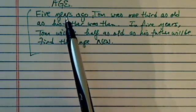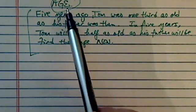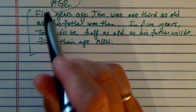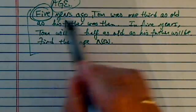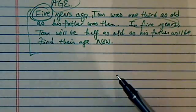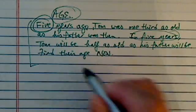Today we have a very interesting word problem here that's age-related. In solving this age-related problem, a common mistake students make is that they don't take into consideration of the time. So it's five years ago and then five years later. The best way to avoid any mistake dealing with this type of problem is starting with a table.